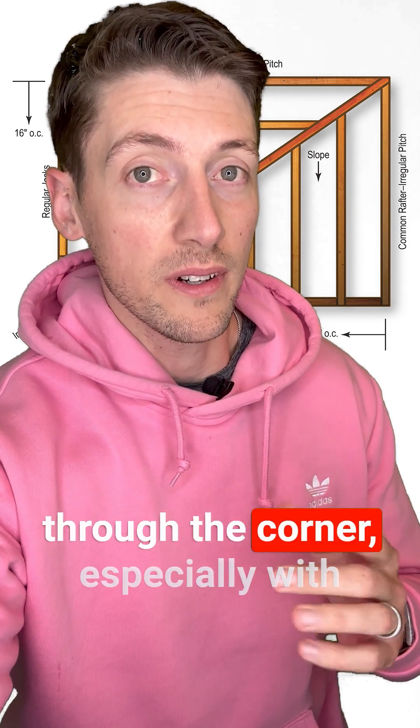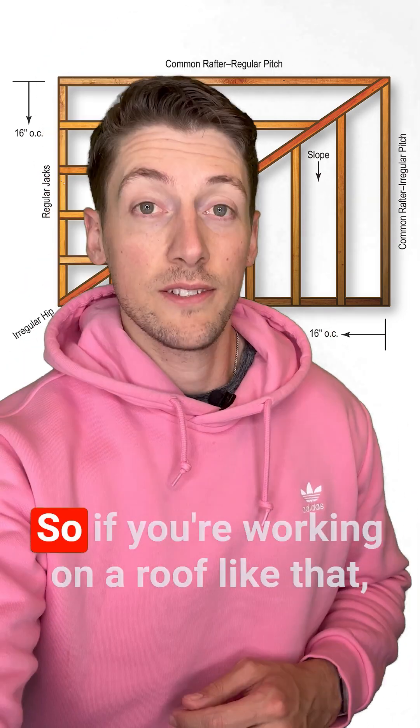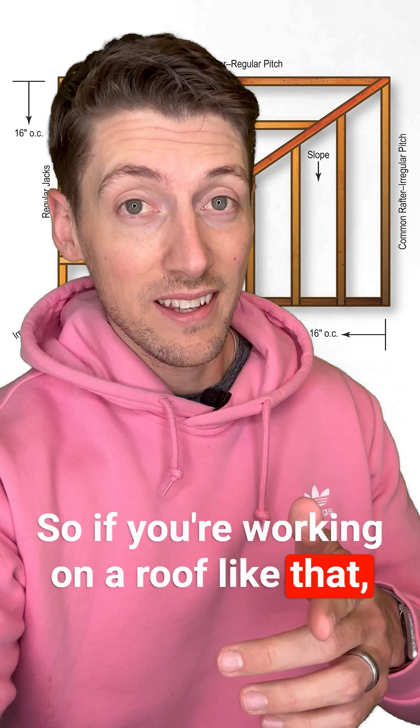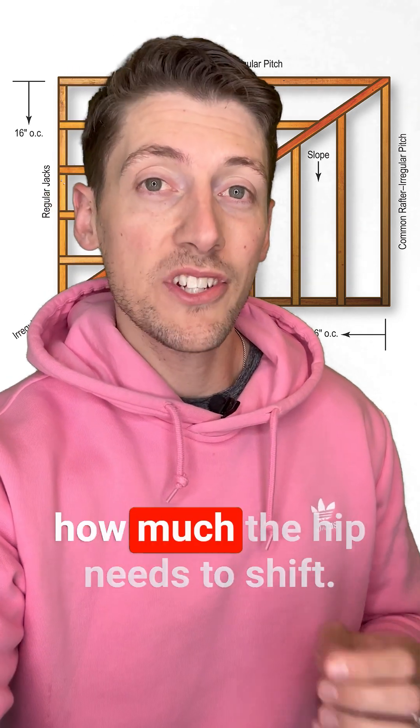Irregular hips don't always run through the corner, especially with equal overhangs. So if you're working on a roof like that, here's how you can figure out how much the hip needs to shift.